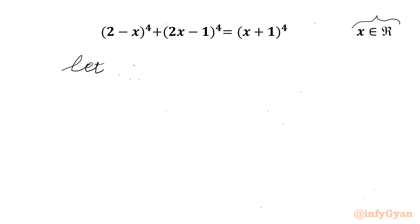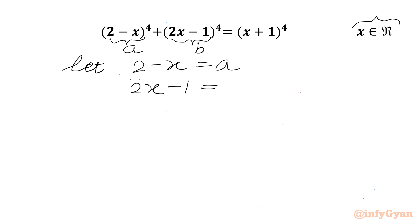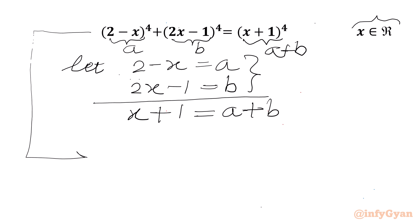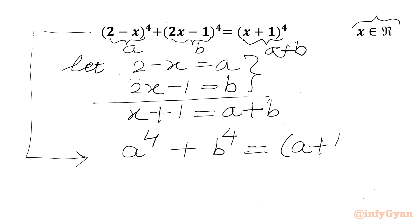Let us say 2 minus x equal to a, and 2x minus 1 equal to b. Now I will add these two equations: 2x minus x is x, and 2 minus 1 plus 1 gives a plus b equal to 1. So our equation becomes a^4 plus b^4 equal to (a plus b)^4.